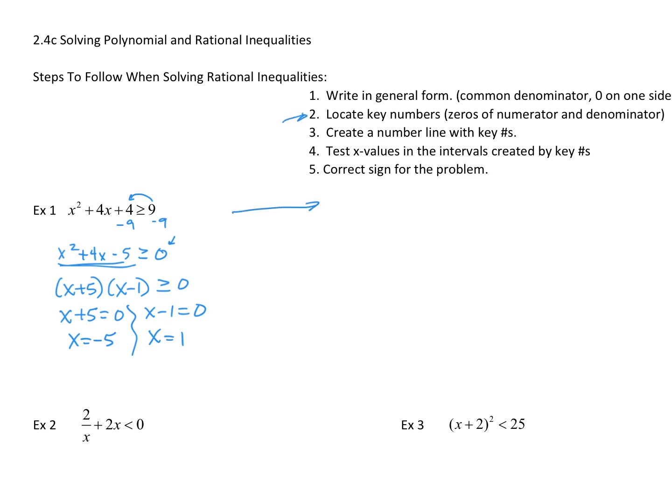Now create a number line. If I create a number line, I have negative 5 and I have 1. Neither one of these is in a denominator. But I do notice that in my inequality there is an 'or equal to,' so I'm going to put closed circles. And then I'm going to test some values.